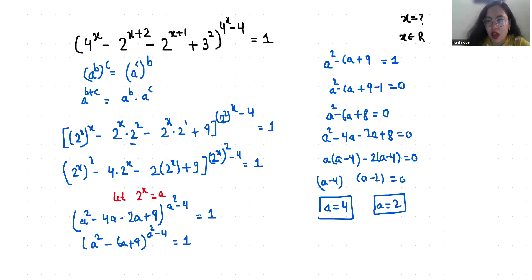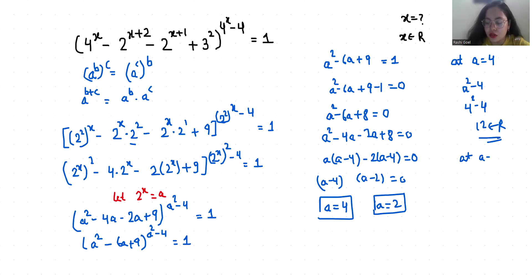Now we check the exponent values. When a equals 4, the exponent is a² minus 4, that is 4² minus 4, which is 16 minus 4, equals 12. When a equals 2, the exponent is 2² minus 4, that is 4 minus 4, equals 0. Both belong to real solutions.